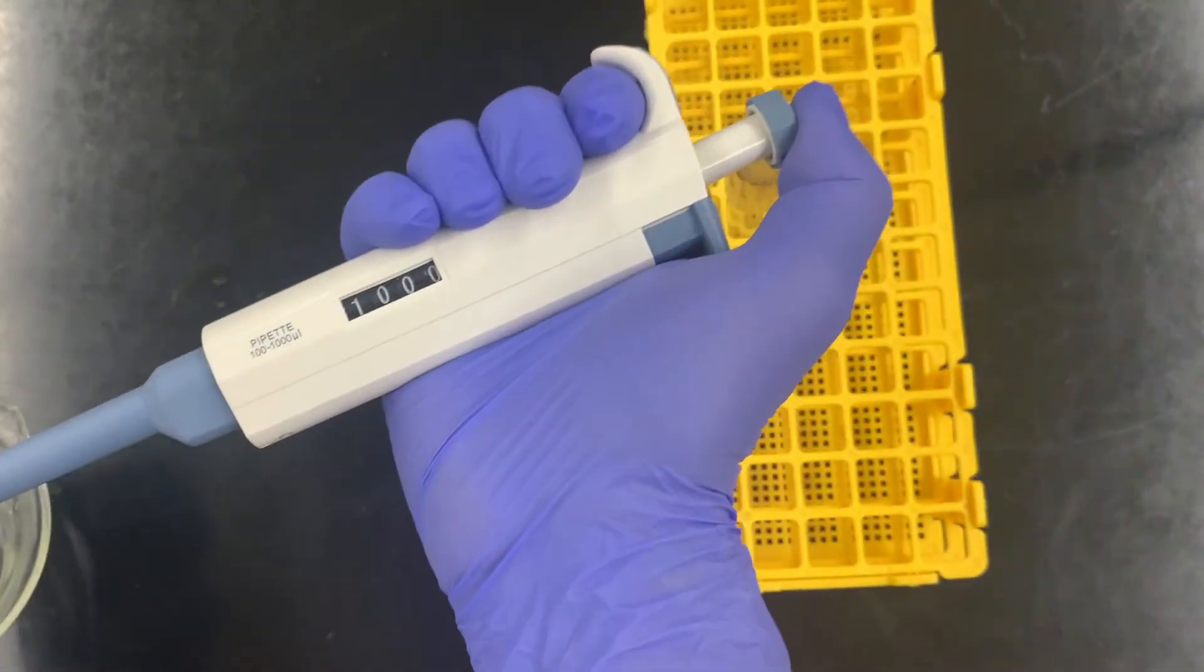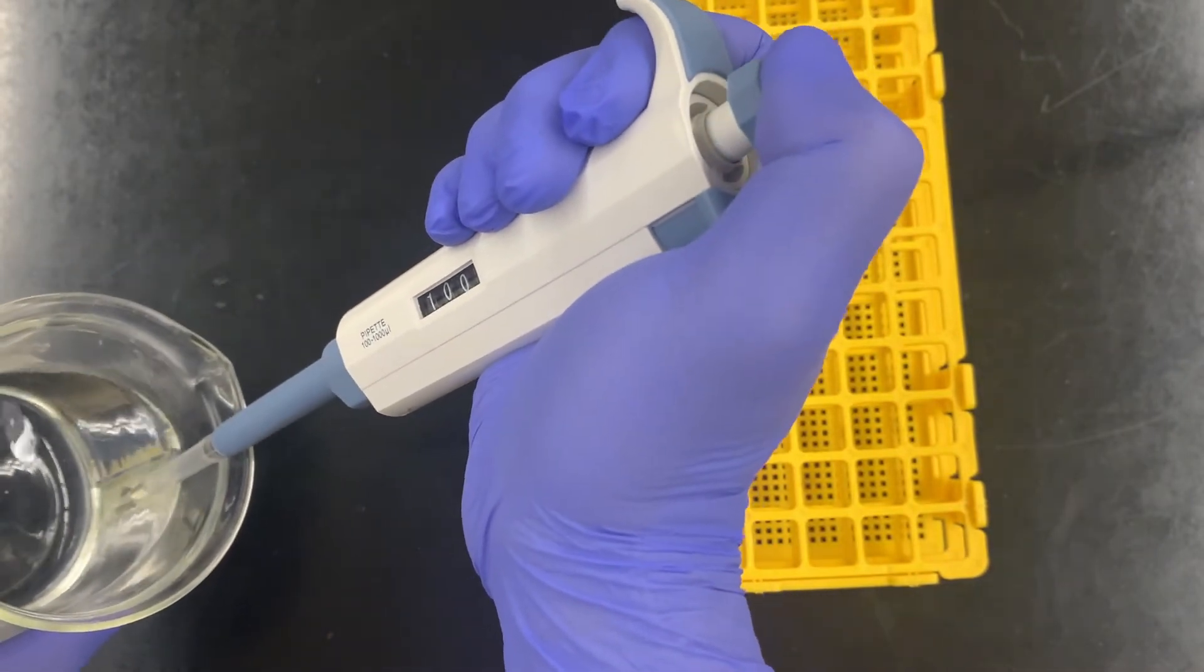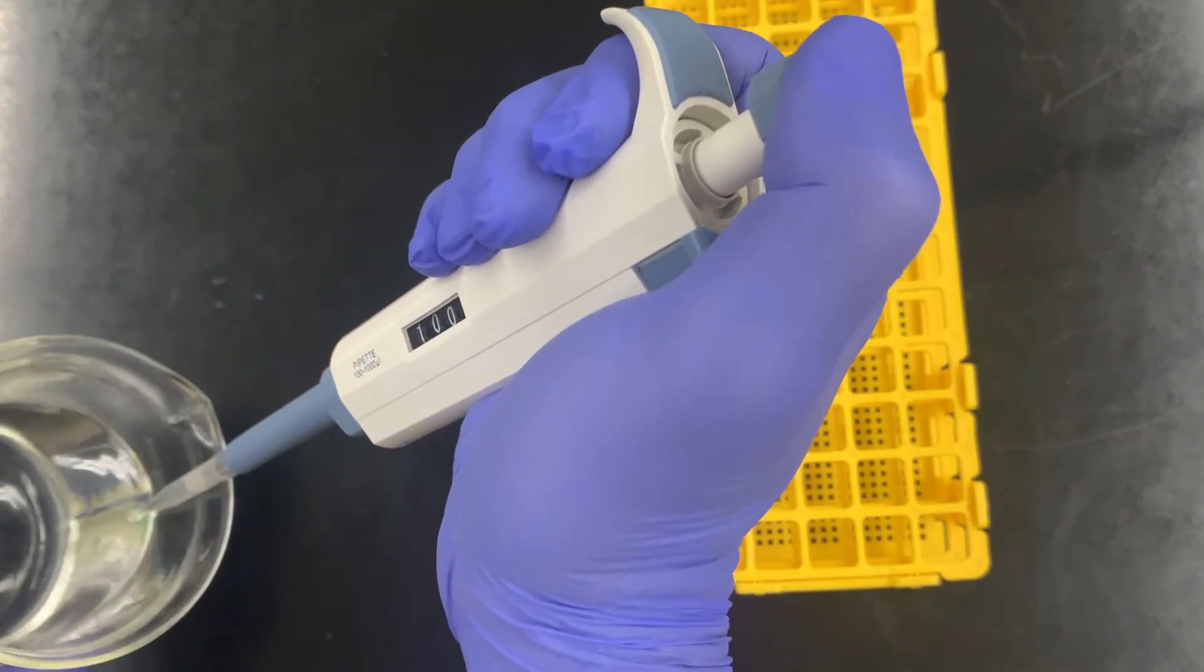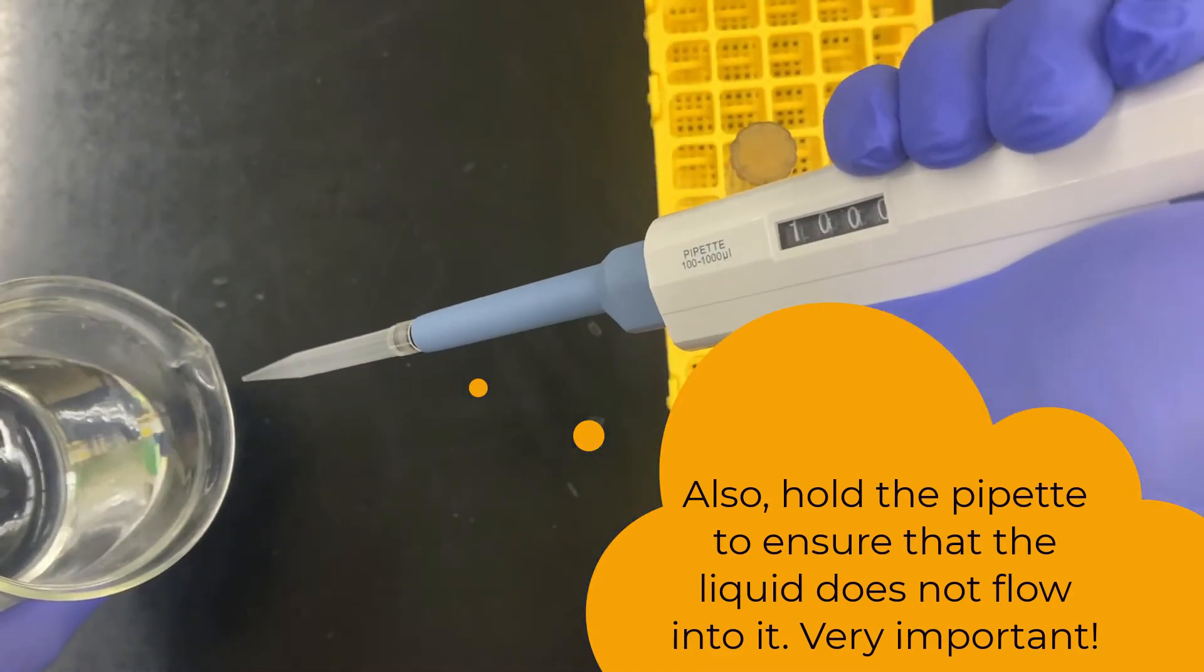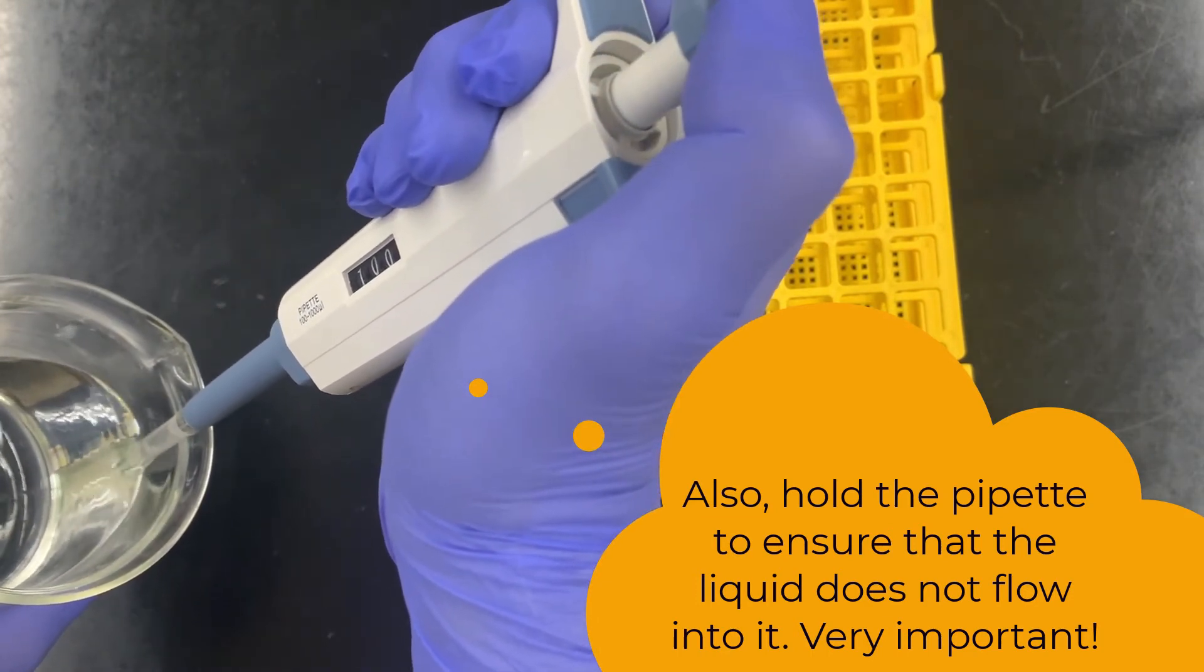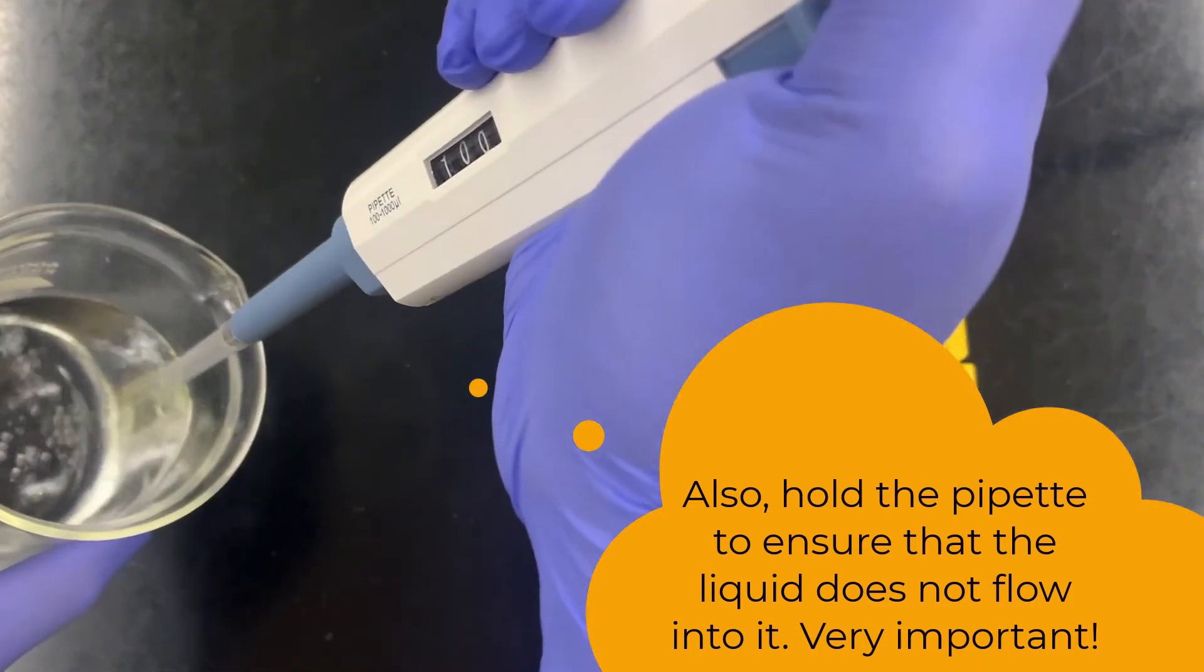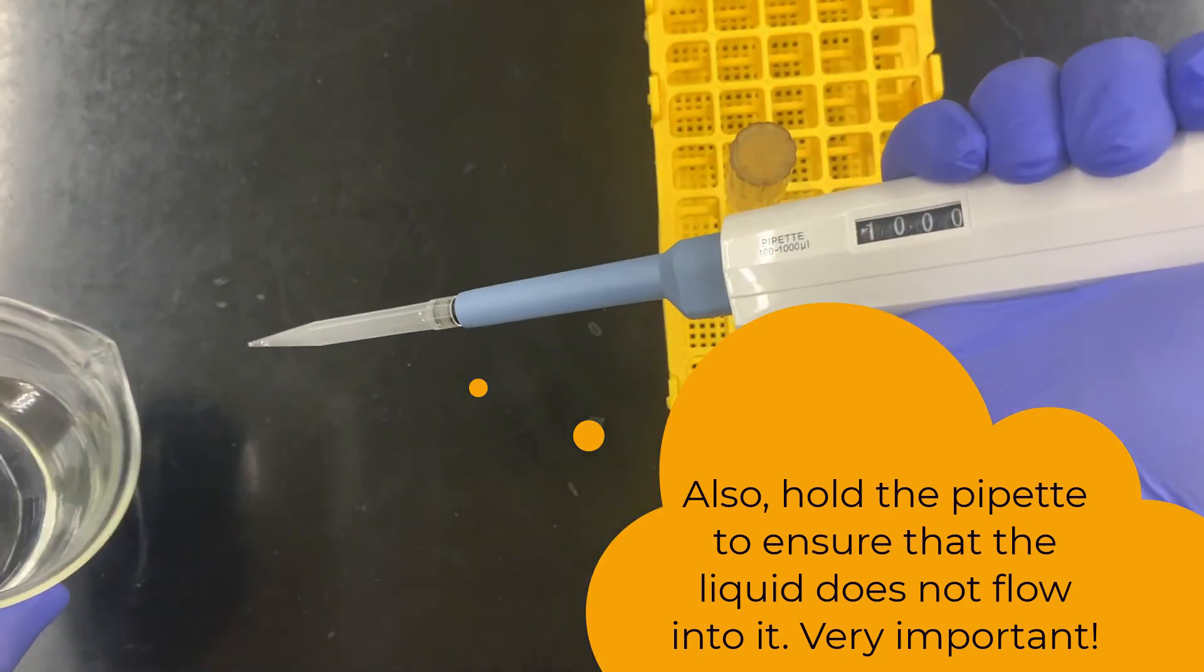Once again, go to first stop, into the liquid, nice and slow, pull out. To release and get the volume out, nice and slow, stop at first stop, go to second, then let go. If you go to second stop and let go before you take it out, you'll get some liquid back in. Make sure you're very well aware. Second stop, take it out, and then we're done.